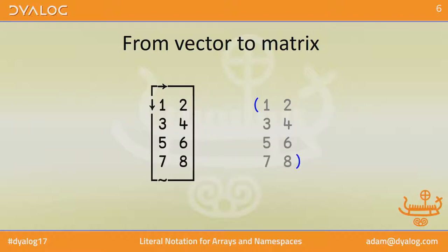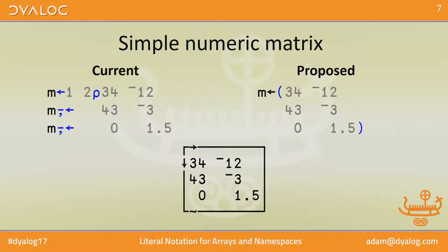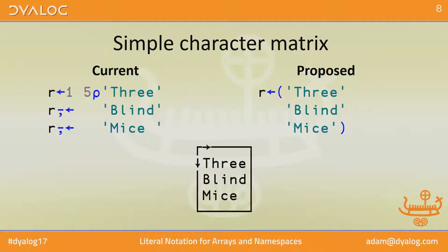We're going to take this notation and stretch it out. You stretch the vector into two dimensions and you've got a matrix. If you want to construct a simple numeric matrix currently, there are several ways to do it — here's a common one. And here's the proposal next to it. For a character matrix, you've probably done something like this currently, and again the proposed notation is pretty clean in comparison.